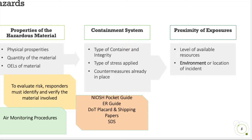When looking at a hazardous material, we have to understand the physical properties, how much material is there, and what are the occupational exposure limits. Is it really low parts per million that cause health effects — meaning it's highly toxic? Something at one part per million is far more toxic than an agent where 50 parts per million is considered lethal. What is the actual risk to the responders? We put responders in the first priority slot — they must be kept safe or they can't go in and save somebody. There are always air monitoring procedures in place, which we also cover in the confined space module.